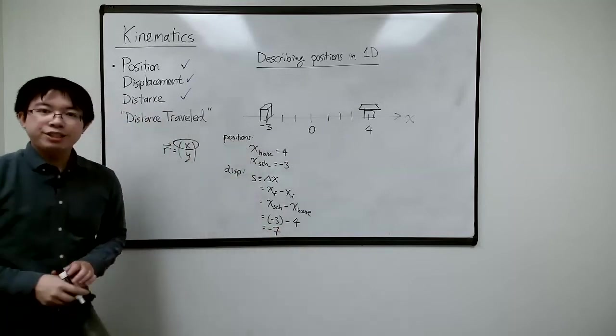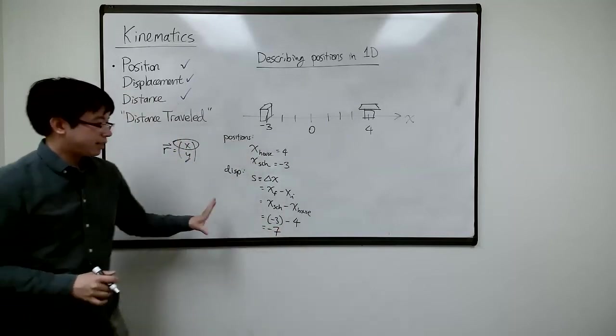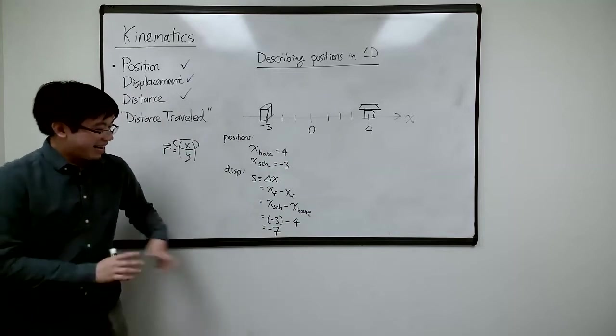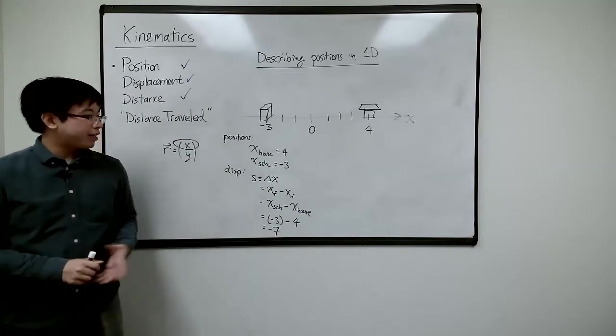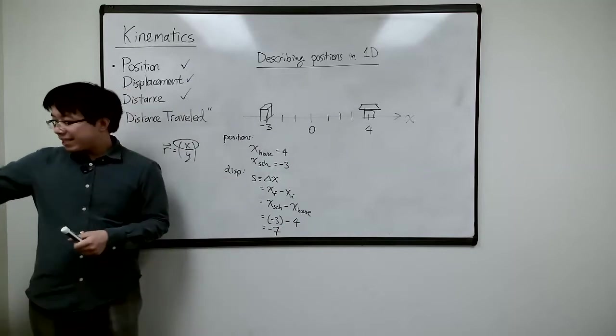So what's the result? It's minus seven. Can you see it over there? I think so. Just about. I'll write larger next time. Yeah. So S is minus seven. What does that mean? Does that make sense?